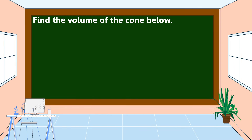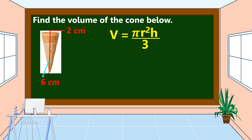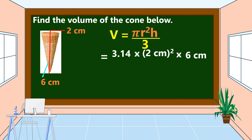Find the volume of the cone below with a radius of 2 centimeters and a height of 6 centimeters. The formula to find the volume of a cone is: Volume = π × r² × h ÷ 3. The estimated value of pi is 3.14. The radius squared is 2 centimeters raised to the power of 2. We multiply by the height, which is 6 centimeters, then divide by 3.